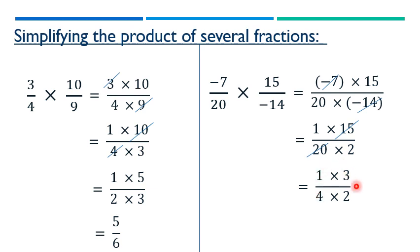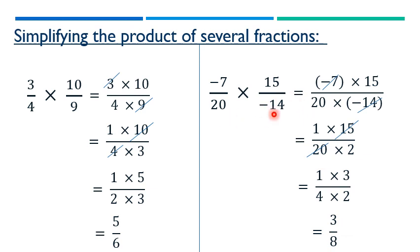With no more common factors, we multiply: 1 times 3 equals 3 in the numerator, and 4 times 2 equals 8 in the denominator. So 3 over 8 is the simplest term of the product of these two fractions.